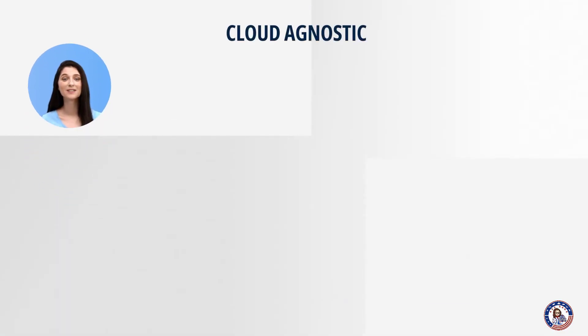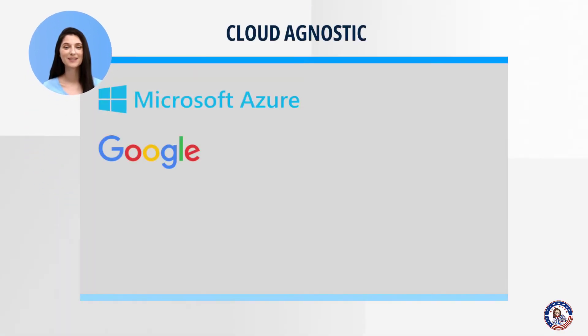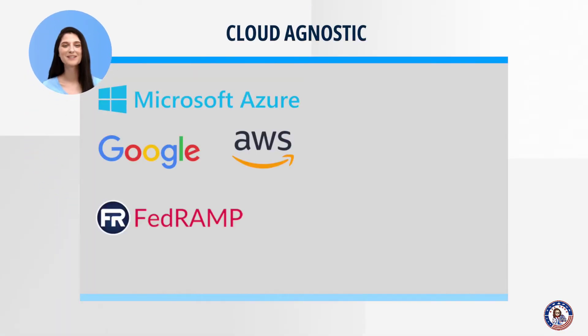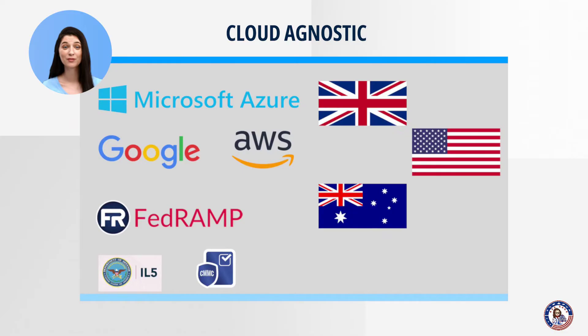1. Cloud Agnostic. We operate on a cloud agnostic platform, capable of running anywhere, on any cloud, or even on-premise.